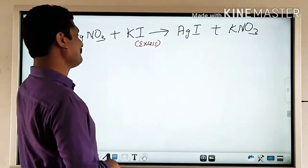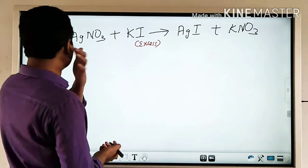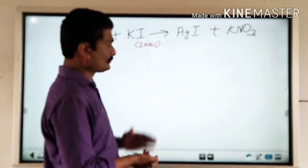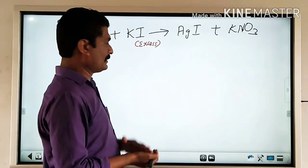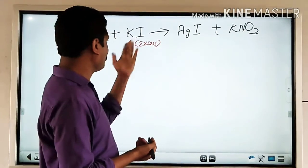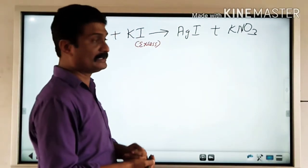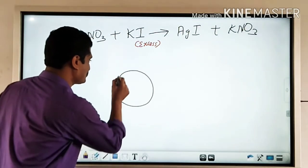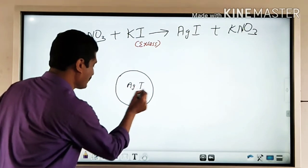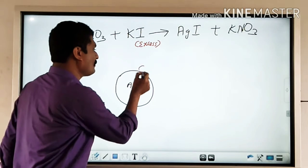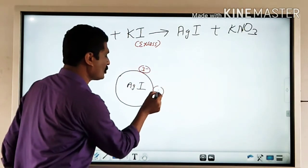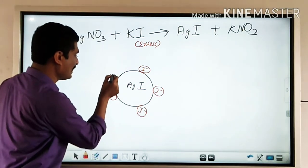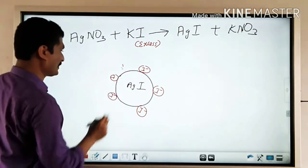Then if we add excess KI — excess potassium iodide solution — to AgNO3 solution, the solution will consist of a large number of excess K⁺ ions and unreacted I⁻ ions. In this case, preferential adsorption takes place: the AgI particles adsorb the common ion, I⁻, from the solution, and the AgI particles become negatively charged.